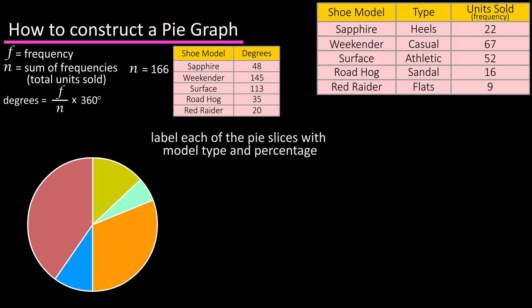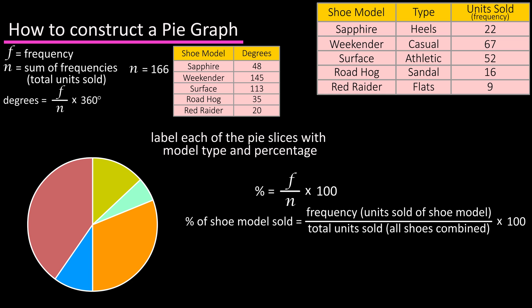The last thing we need to do is label each of the pie slices with the shoe types and the percentages of each shoe type. The formula for calculating the percentage of sales for each of the shoes is percentage equals f over n, or the number of sales of a shoe model, divided by the total number of sales, and take that number and multiply it by 100.